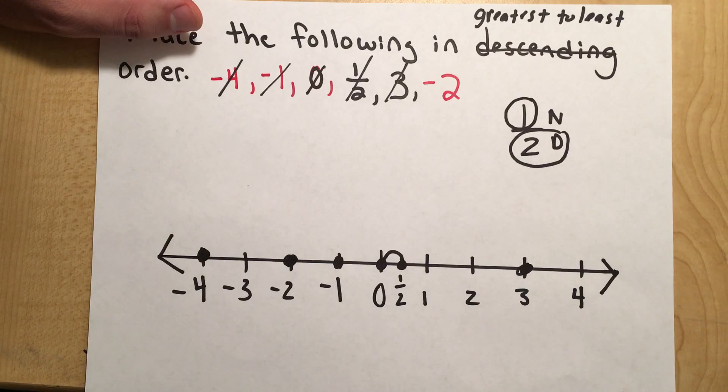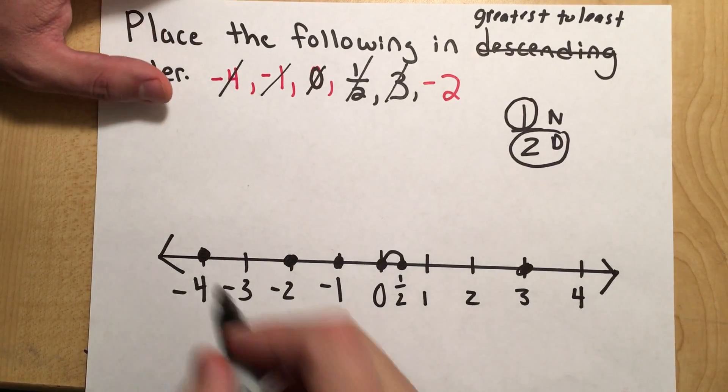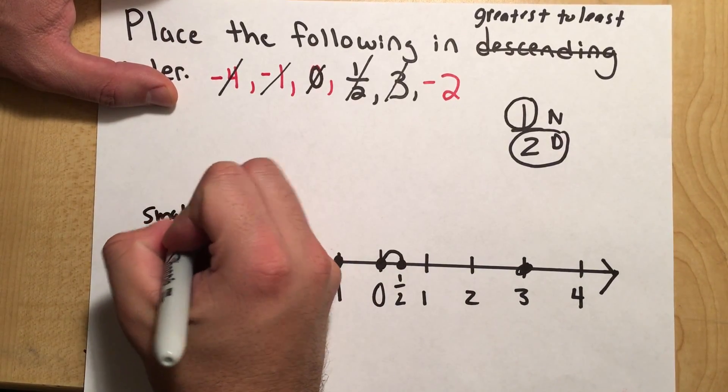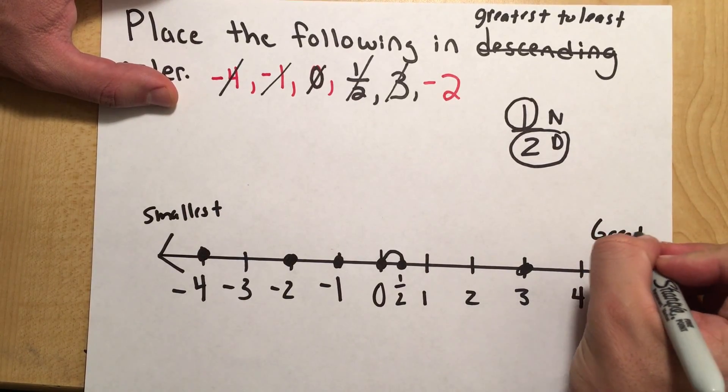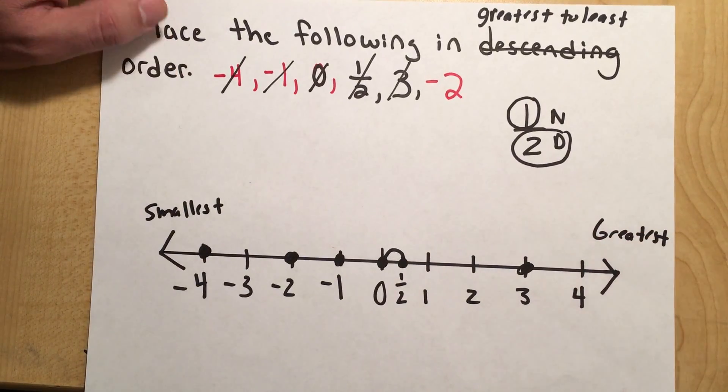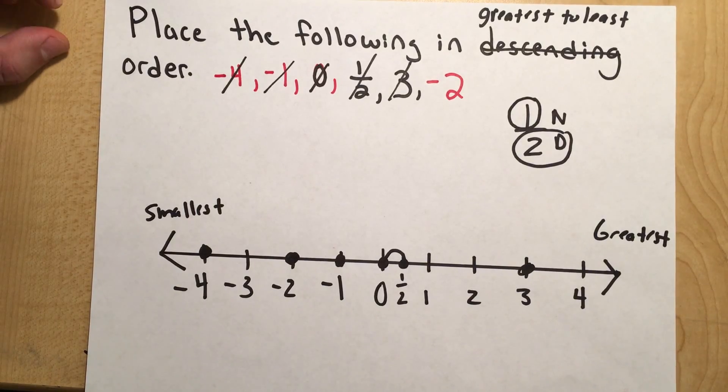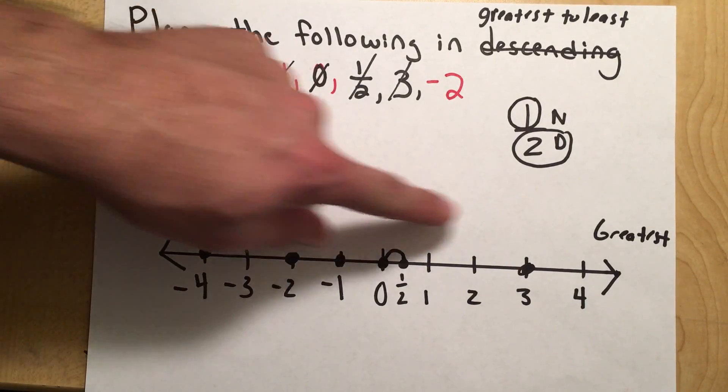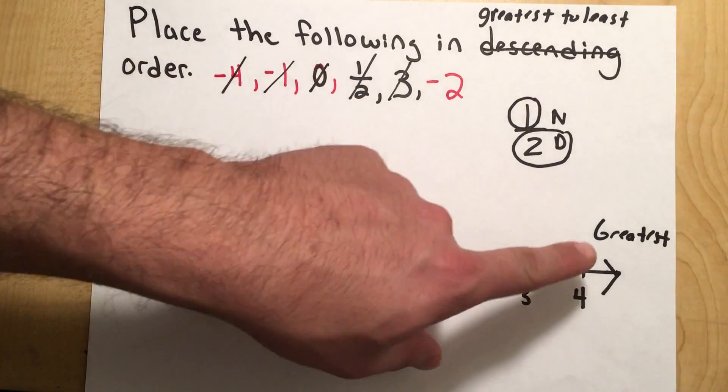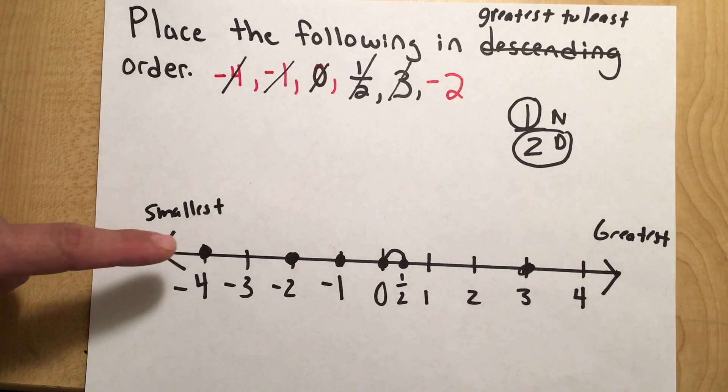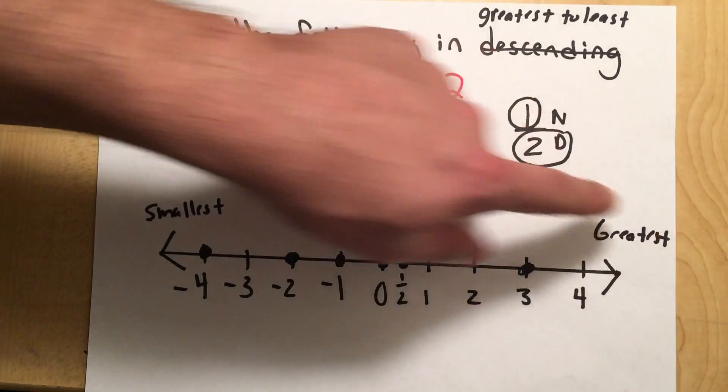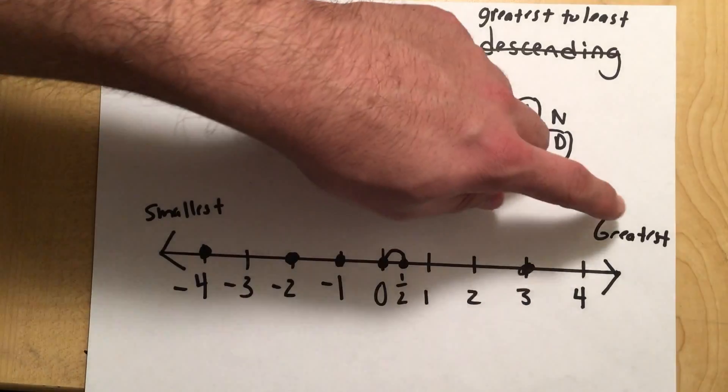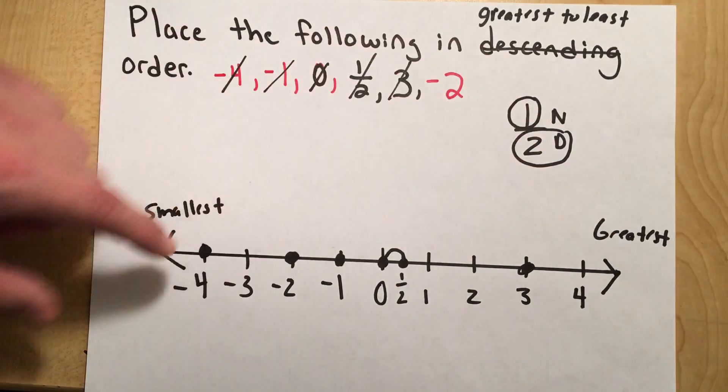And now that we've put them on our number line, now they're in order from the smallest number, the one that's furthest to the left, to the greatest. A number line is a great strategy to use so we can put them in order. Now that we've plotted them all on here, they're in order from the smallest to the greatest, from the biggest number, which is 3, to the smallest, which is negative 4.